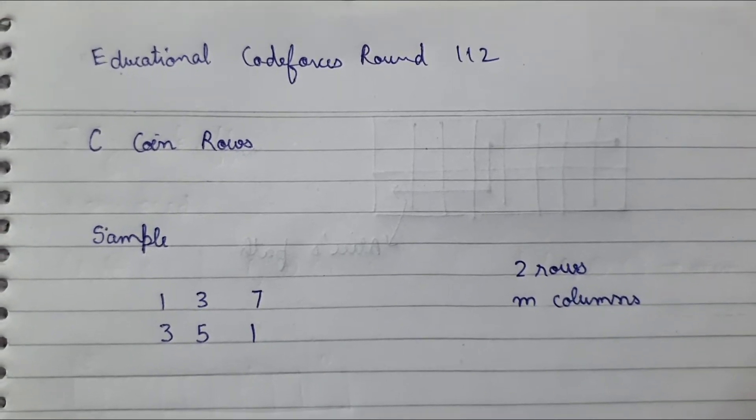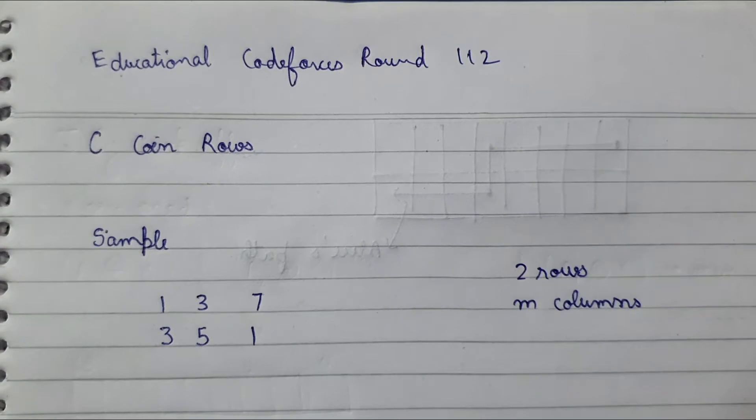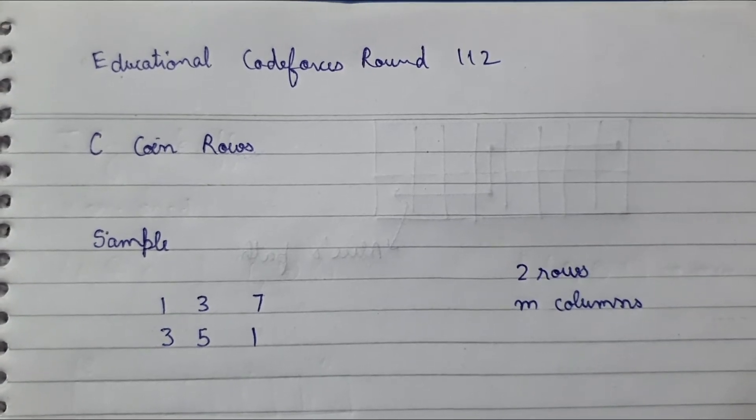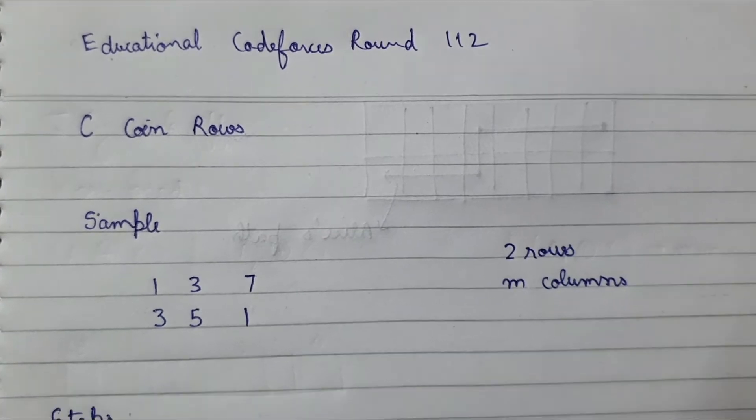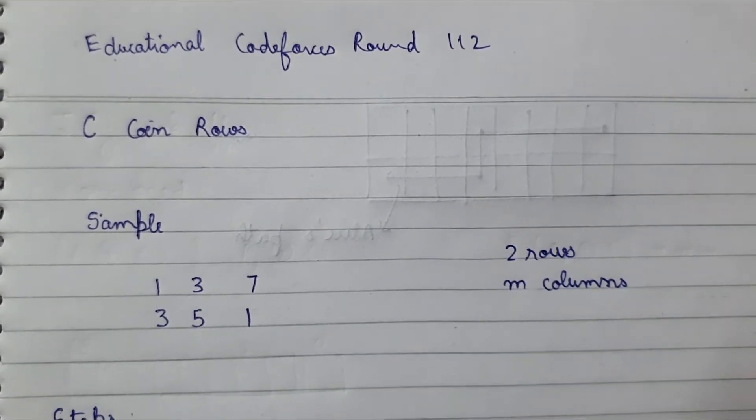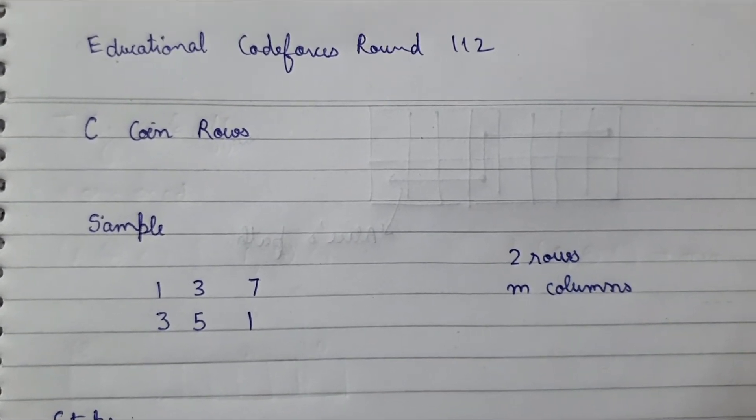In this question, two players Alice and Bob are playing. Alice has to play in such a way that Bob scores the minimum. The first thing that comes to mind is to give Alice the maximum score so Bob can't get the maximum score, but that is not the case.